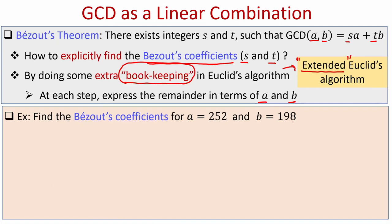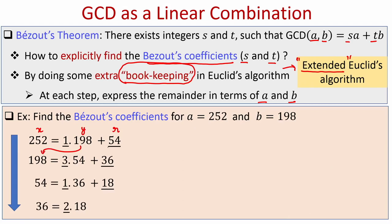Suppose A is 252 and B is 198, and I want to find the Bezout coefficients S and T for this pair. Let us see how the various remainders are computed during execution of Euclid's GCD algorithm. In the first step, X is 252, Y is 198, and we compute R. In the next iteration the current R becomes the new Y, and we continue. The underlined values are the remainders obtained and the underlined things in the computation are the quotients.